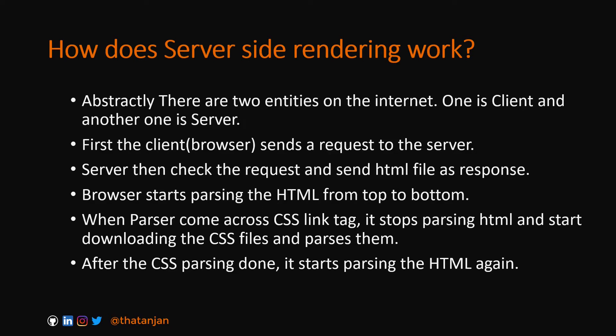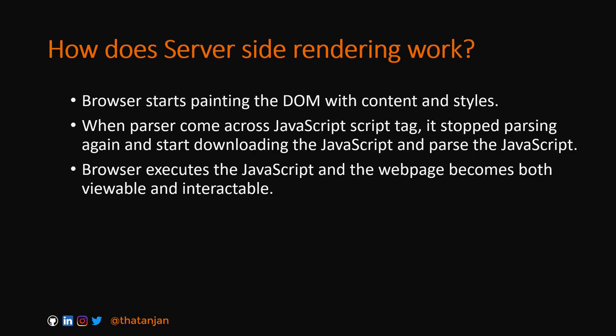How does server-side rendering work? Abstractly, there are two entities on the internet: one is the client and the other is the server. The client simply means the user, or more precisely the browser, or it could be a mobile application. First, the client sends a request to the server. The server checks the request and sends an HTML file as a response. The browser starts parsing the HTML from top to bottom. When the parser encounters a CSS link tag, it stops parsing HTML and starts downloading and parsing the CSS files.